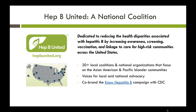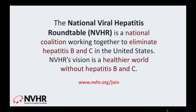Hep B United was founded in 2012 by the Hepatitis B Foundation and the Association of Asian Pacific Health Organizations, or APCHO. Hep B United is a national coalition of more than 35 members across 18 states and the District of Columbia, representing health clinics, local and state health departments, community-based social service organizations, and academic and research institutes. The coalition is dedicated to reducing health disparities associated with hepatitis B by increasing awareness, screening, vaccination, and linkage to care for high-risk communities.